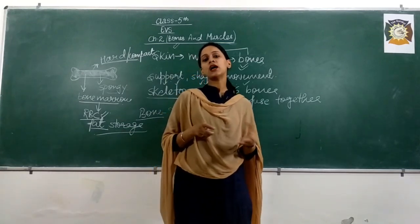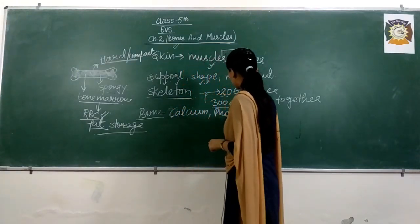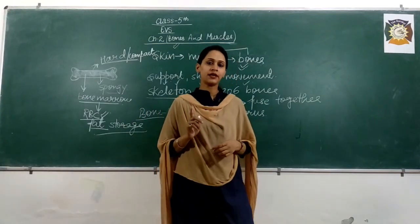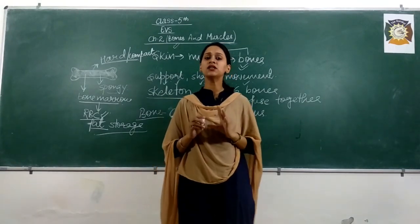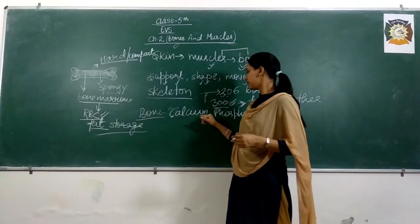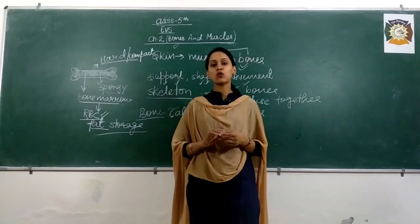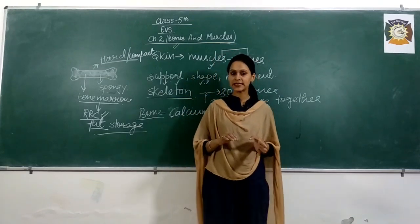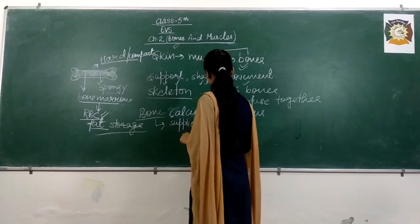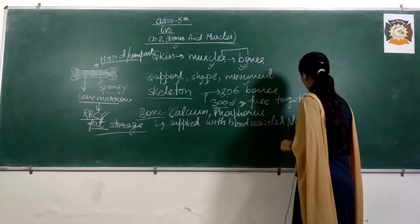One more thing — what is a bone made up of? A bone is made up of calcium and phosphorus. Earlier, in the chapter on eating habits, I discussed that there are certain minerals in the body which are very crucial, such as calcium, phosphorus, and magnesium. Calcium and phosphorus are minerals, and bone is made up of calcium and phosphorus. Apart from this, a bone is also supplied with blood vessels and nerves.